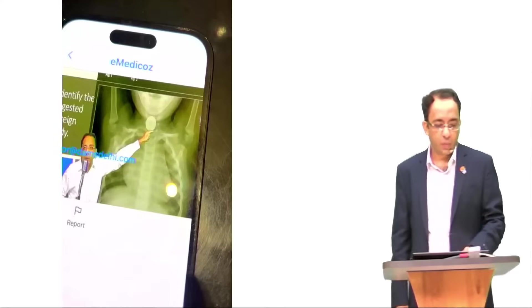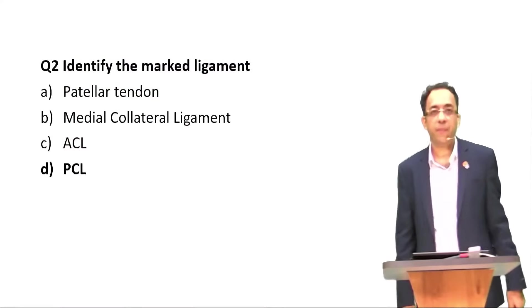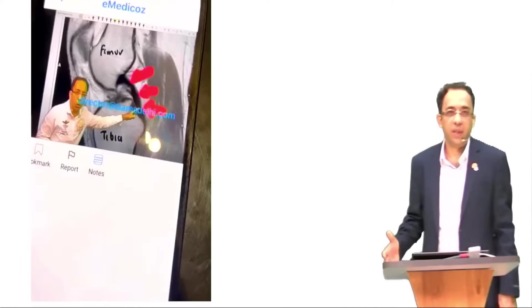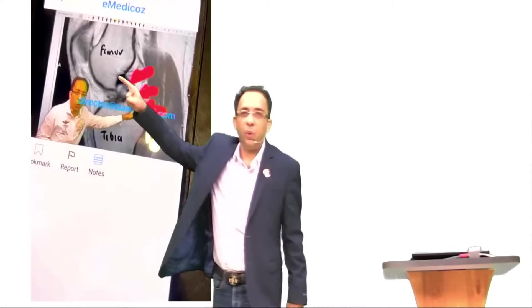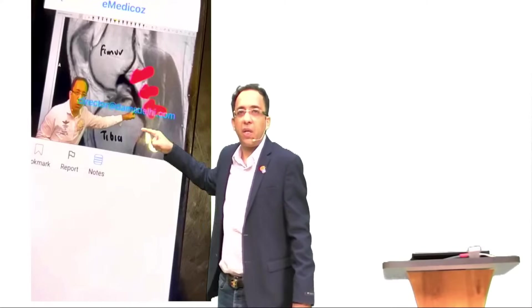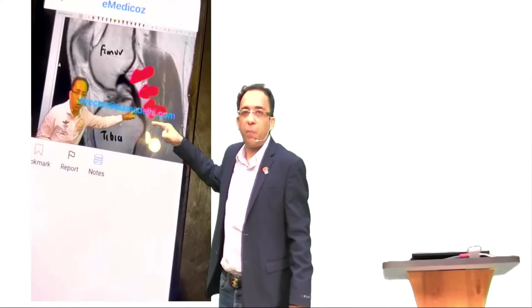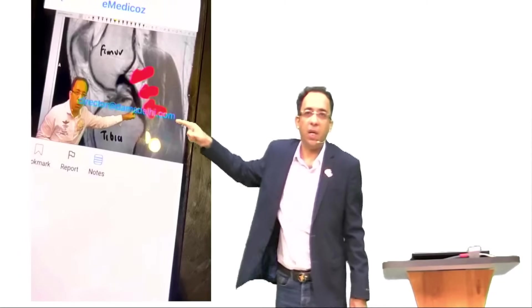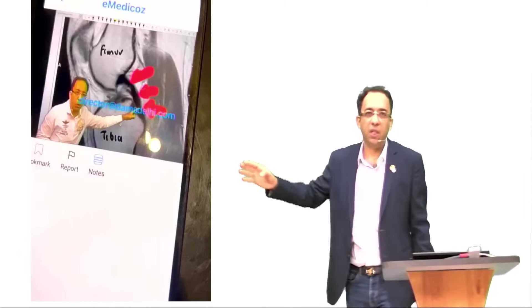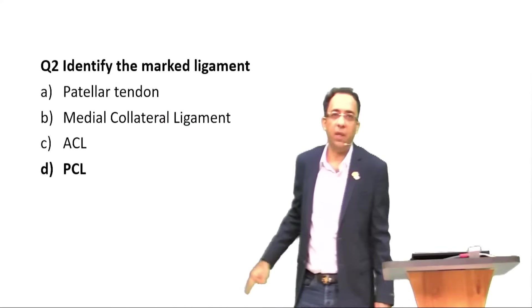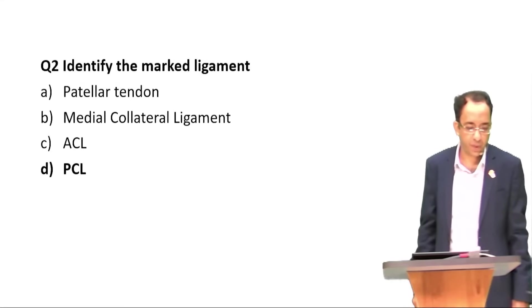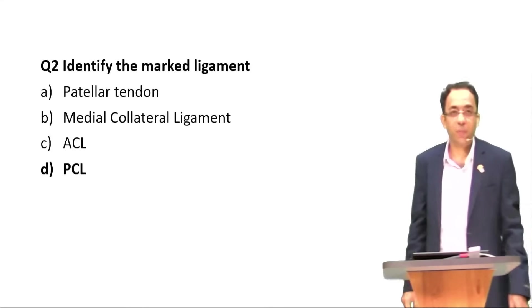The next question I wanted to show you is one we discussed at length in our classes. I showed a ligament connecting in the intercondylar notch from the femur to the posterior part of the tibia. In the regular class, we discussed that they can ask you ACL or PCL. This was the posterior cruciate ligament, and the choices were patellar tendon, medial collateral ligament, ACL, and PCL.